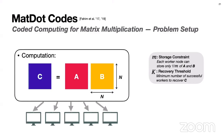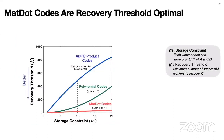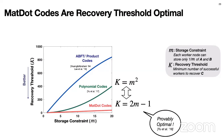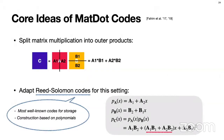MatDot codes are recovery-threshold optimal. Looking at this graph, the Y-axis is the recovery threshold K and the X-axis is the storage constraint M. The blue curve represents the ABFT technique, also rediscovered as product codes in a 2016 paper. More recent work in coded computing, called polynomial codes, achieved significantly better recovery thresholds for the given storage constraint M. MatDot codes reduce this recovery threshold even further. Polynomial codes have recovery threshold of M^2, while MatDot codes have recovery threshold of 2M - 1, which is later proven to be theoretically optimal.